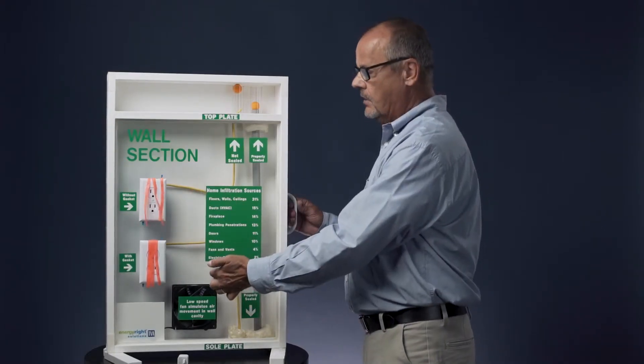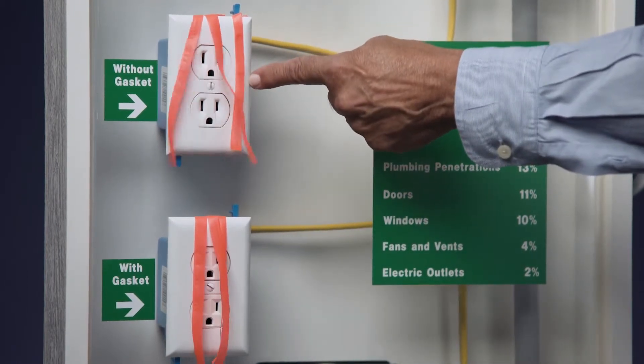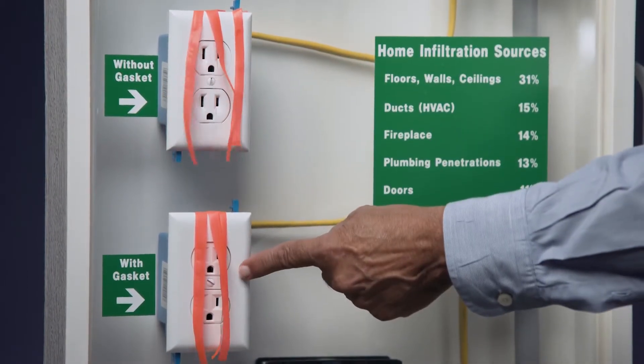While you can't go in and retrofit what's behind the wall, you can do something at your electrical outlets, especially the ones on the outside wall. In the winter, you can actually feel the cold air out of those outlets, so there's a couple of things we can do.